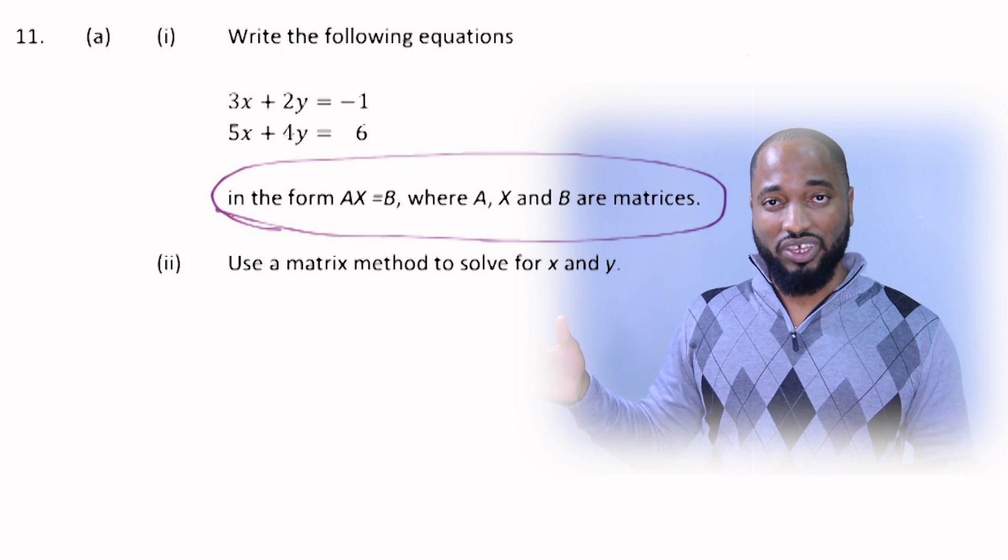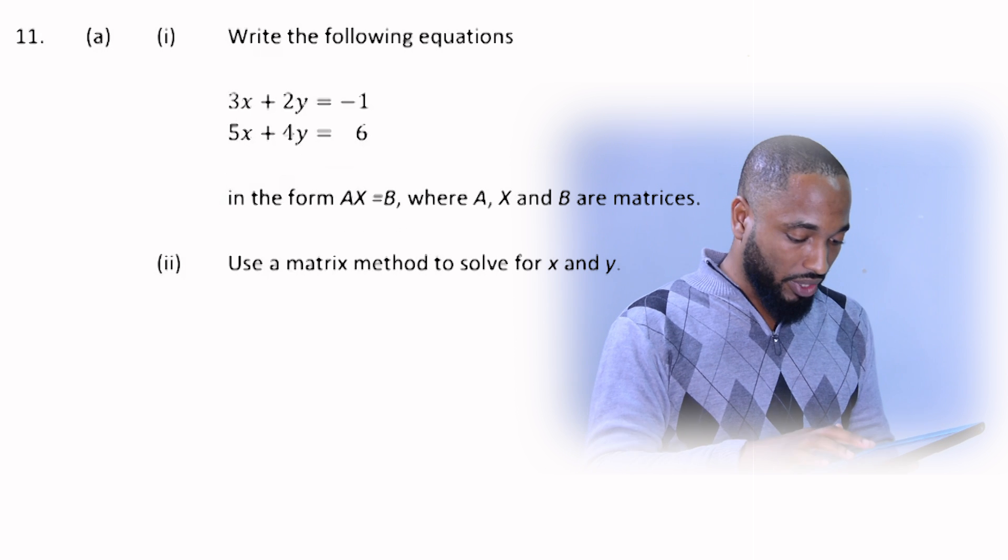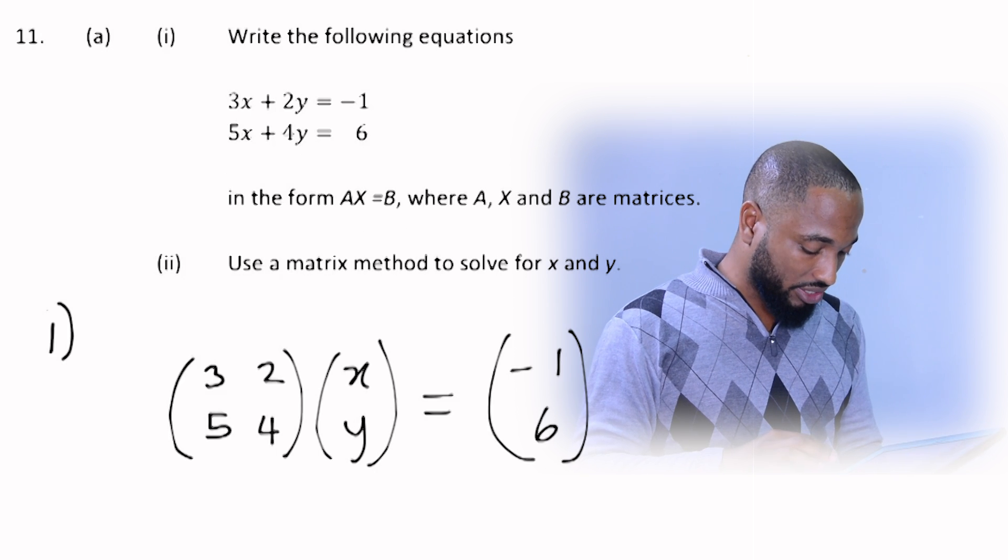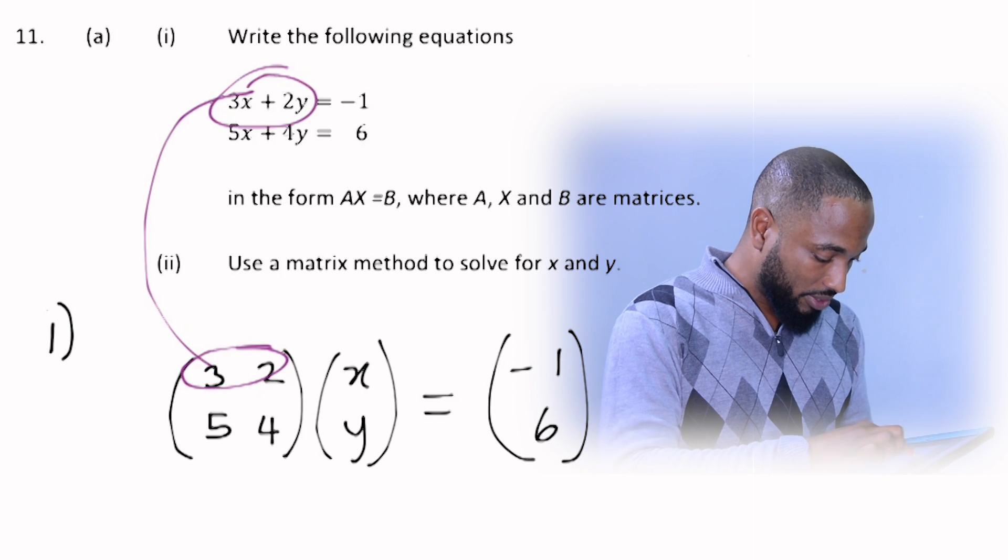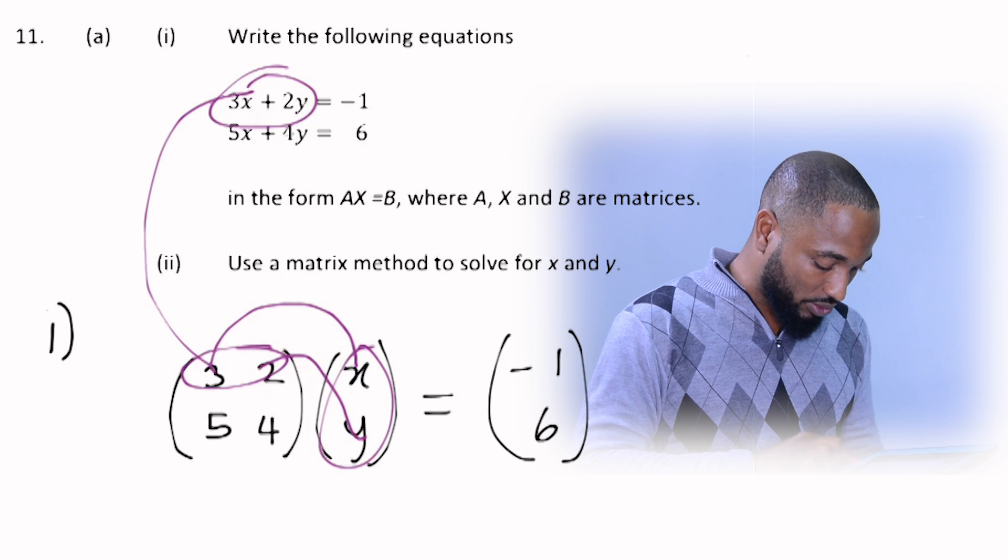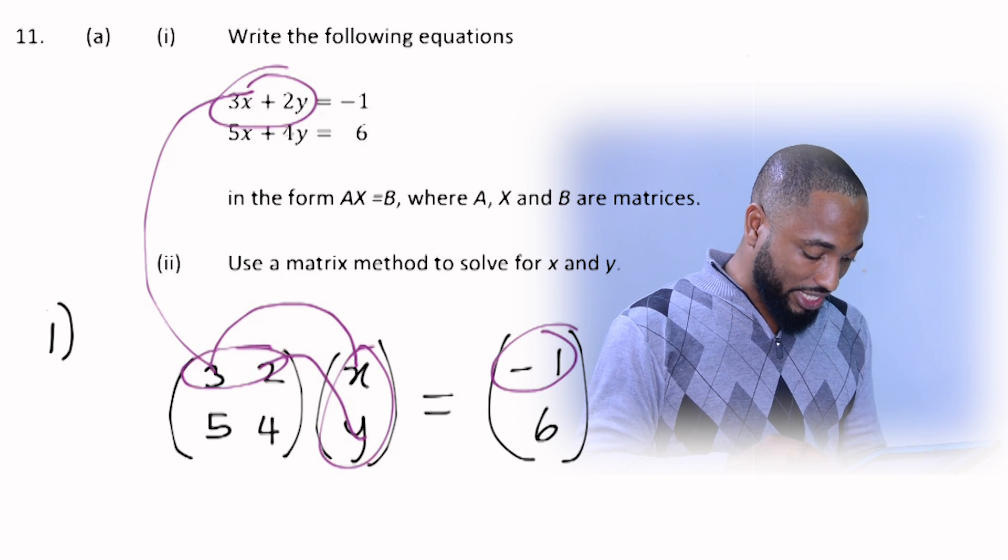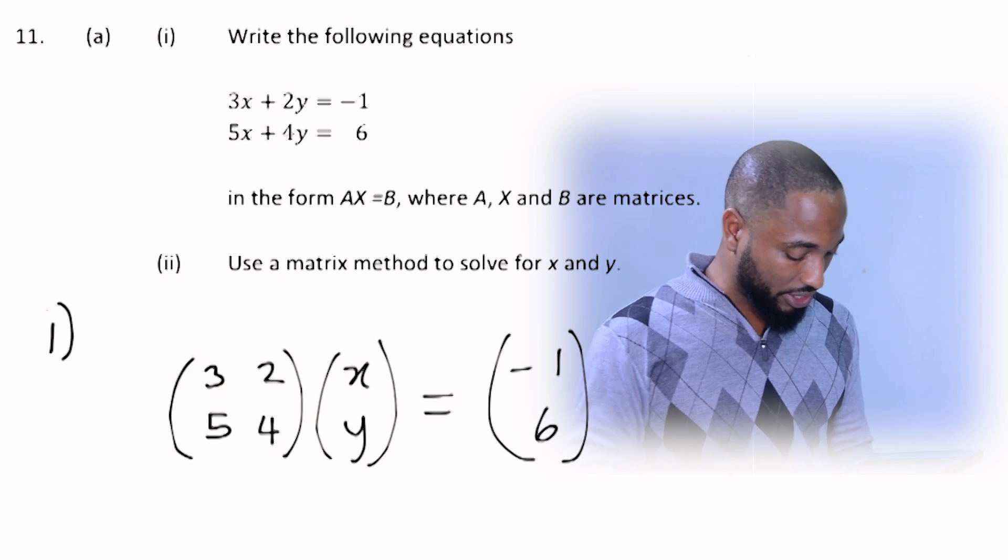First we put it in the matrix form then we reshuffle it. We'll get the inverse then we solve. It's a very simple thing once you catch the hang of it. So this is how it should look. You could see the pattern where all these numbers came from. You could see how it makes back the equation. Matrix is powerful stuff man.